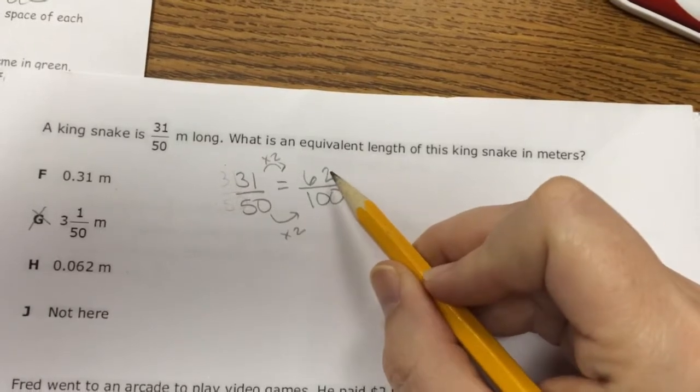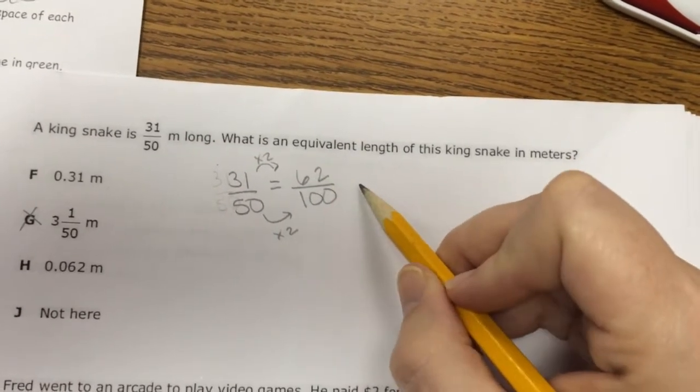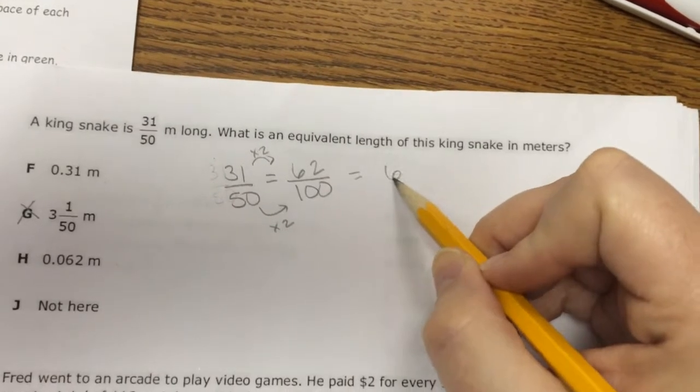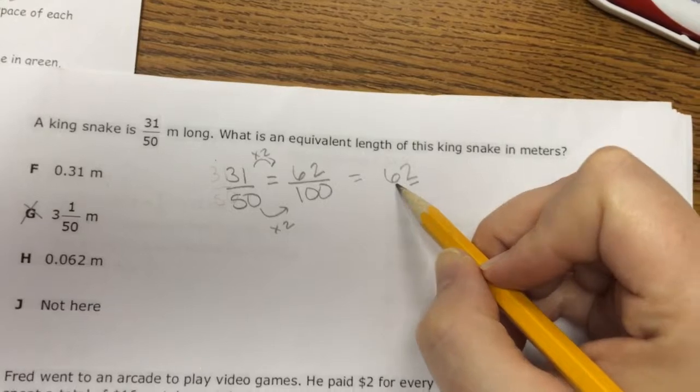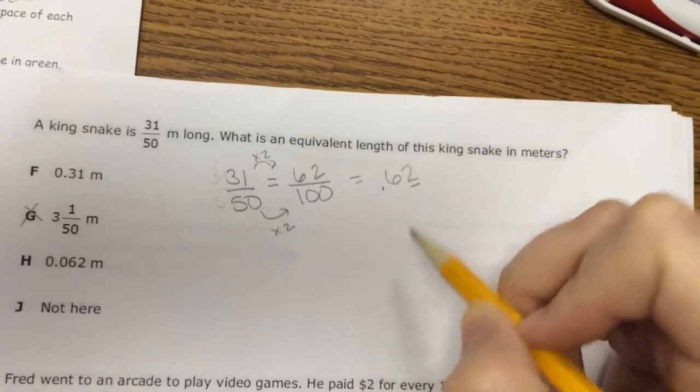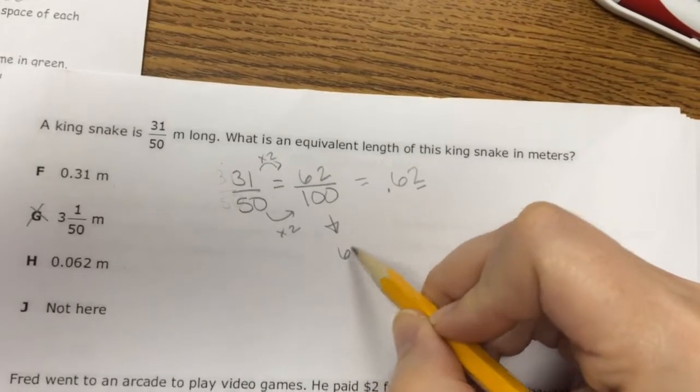I can do it one of two ways. I can write it like I say it. 62 hundredths is the same as 62 hundredths. This should be my hundredths, so hundredths, tenths. My decimal goes right there.